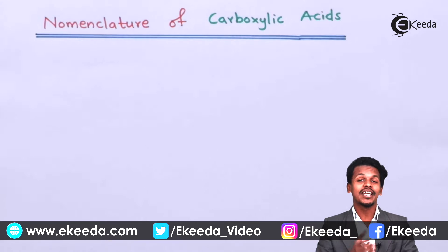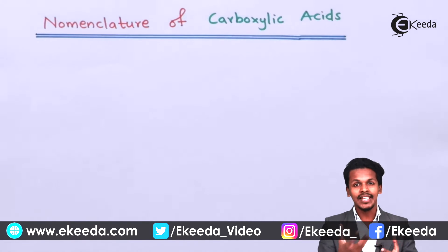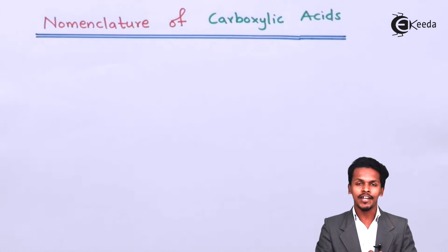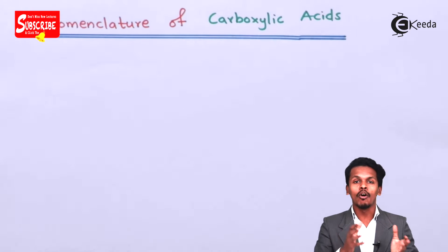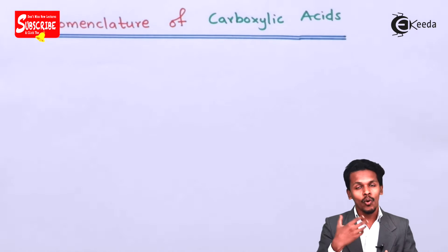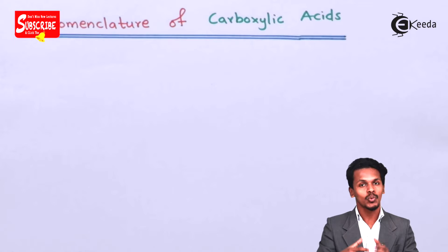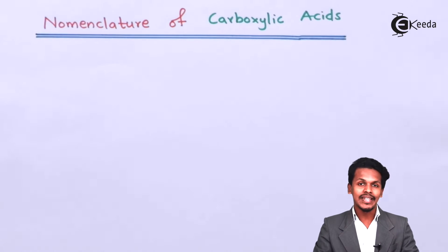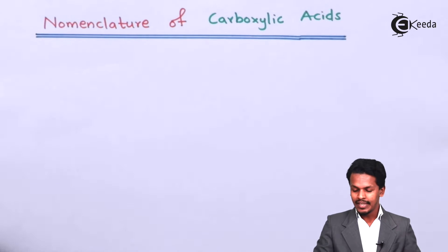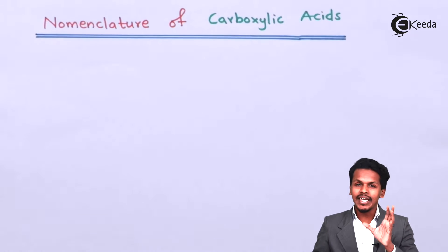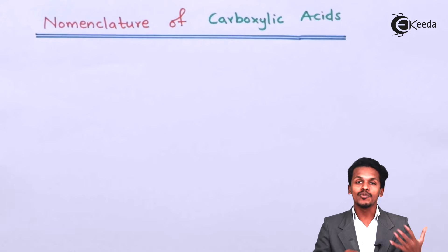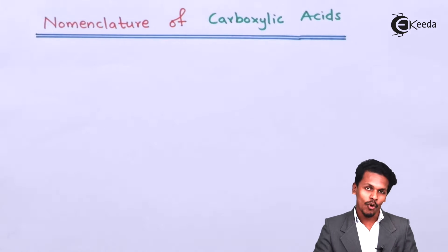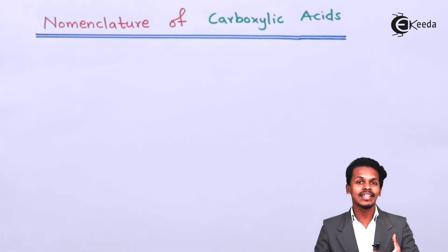There are two systems to give the name to a particular organic compound: the common name system and IUPAC nomenclature. We are going to discuss both the common name system and how we can give IUPAC nomenclature to certain carboxylic acids. The common name given to a carboxylic acid depends upon the source from where the carboxylic acid has been obtained.